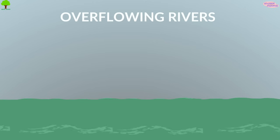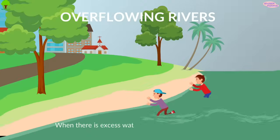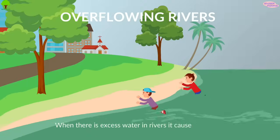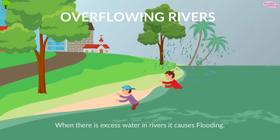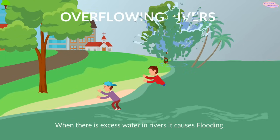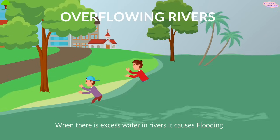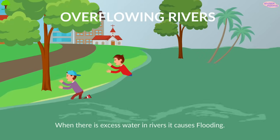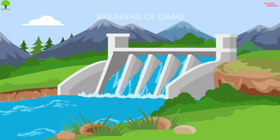Overflowing rivers: when there is more water upstream than usual, and as it flows downstream to the low-lying areas or floodplains, the excess water flows into the land causing flooding.